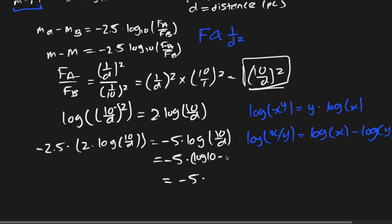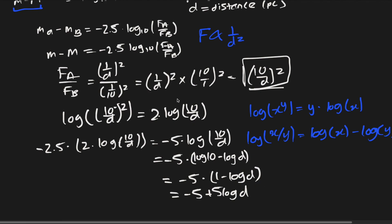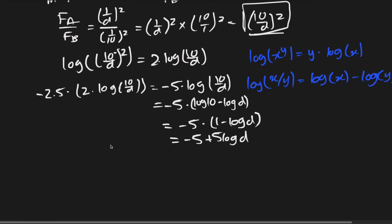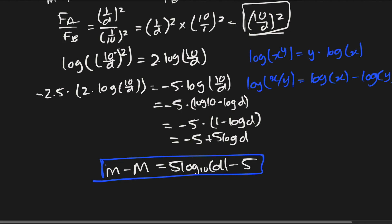Expanding that gives us negative 5 plus 5 log d. We had m minus M on the left-hand side of the equation, so combining both sides we get m minus M equals 5 log d minus 5, which is the distance modulus equation. We have successfully derived the distance modulus equation. Thank you for watching and I'll see you in another video.